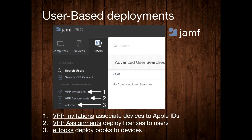The three main parts of user-based book deployment are the VPP invitation, assignment, and the deployment of the book itself. The VPP invitation associates the Apple ID to the device by prompting the user to accept an invitation to allow content to be deployed to that Apple ID. Once completed, VPP assignments deploy a license to that Apple ID — the license is tied to the Apple ID but the book isn't yet downloaded. Step three is where the eBook is actually deployed to the device, allowing the book to be enjoyed by the users.